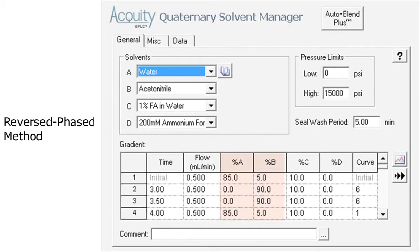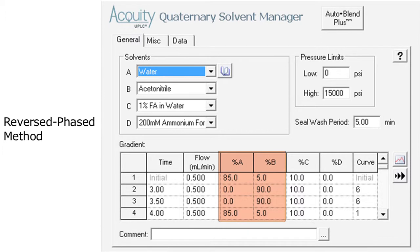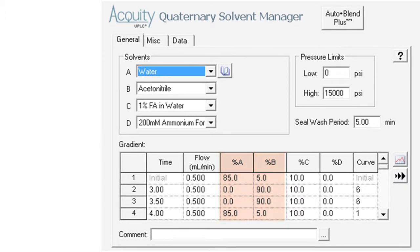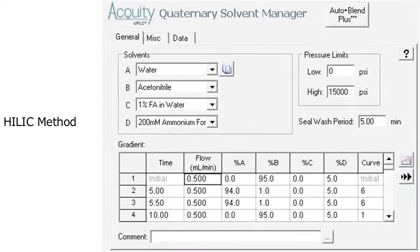This is the reverse phase method. It uses a gradient from reservoir A to B while drawing modifier from C. And this is the HILIC method. It uses a gradient from reservoir B to A while drawing the modifier from D.